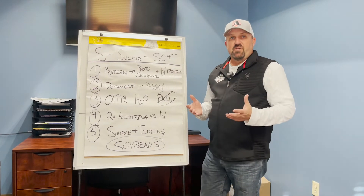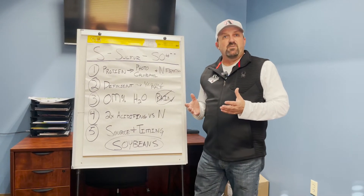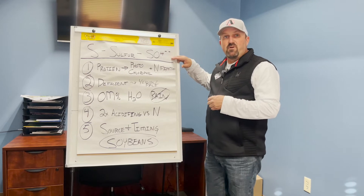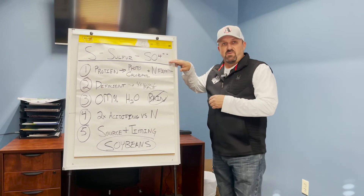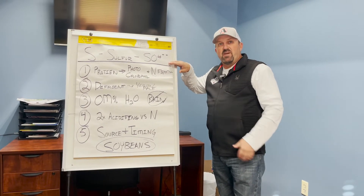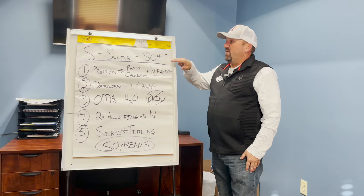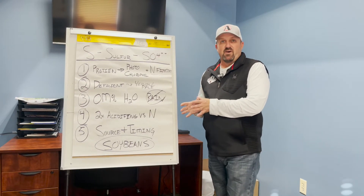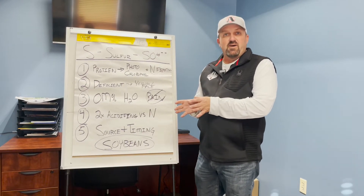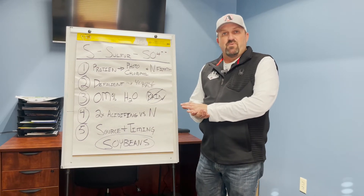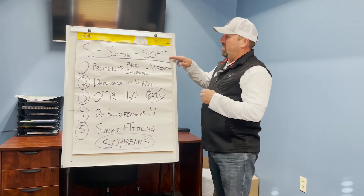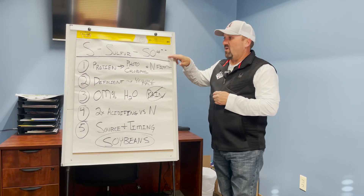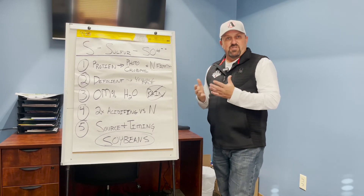This week's Bushel Up we're going to continue down the list of nutrients important in crop production. This week we'll talk about sulfur, signified by the S on your soil test report. SO4, which is a double-negative anion, is the form that the plant will take up, so we want to be careful with this nutrient.